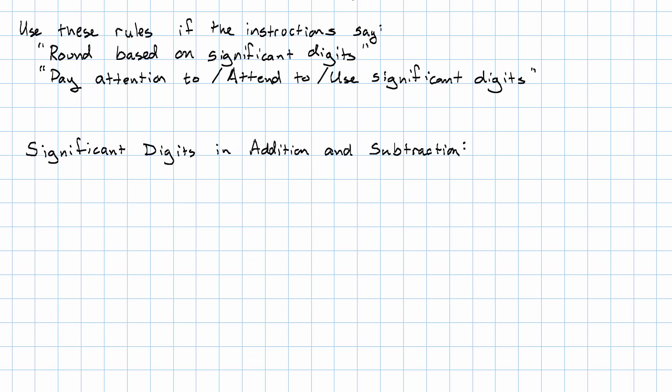So for that reason, when we add or subtract, we'll round to the rightmost place that appears in both numbers. What does that mean? I'm going to show you an example.